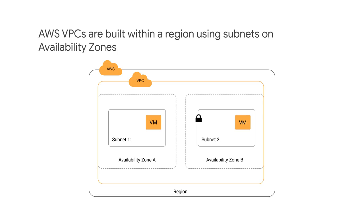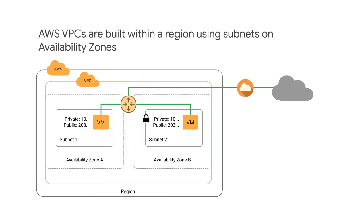The VPC is made up of subnets, which must be built on availability zones in the region. A subnet can be either public or private. A public subnet can route traffic to the internet, while a private subnet's traffic never leaves the VPC.